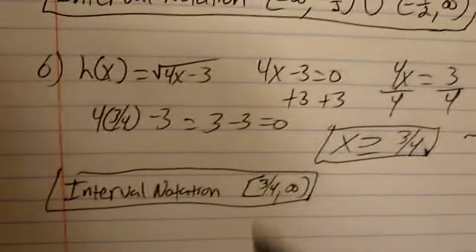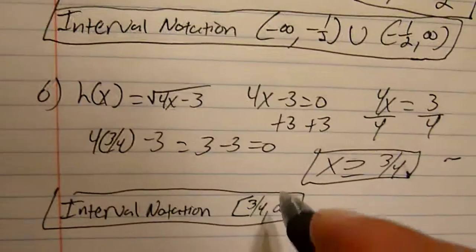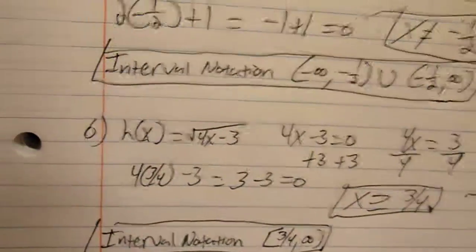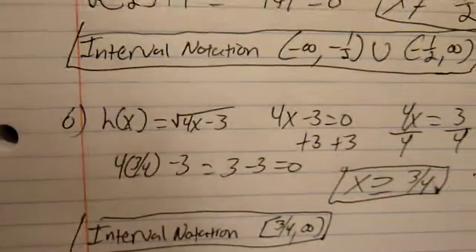In interval notation, it's going to look like bracket 3 fourths to infinity. It's included, so you use the bracket. And that's how you find the domain.